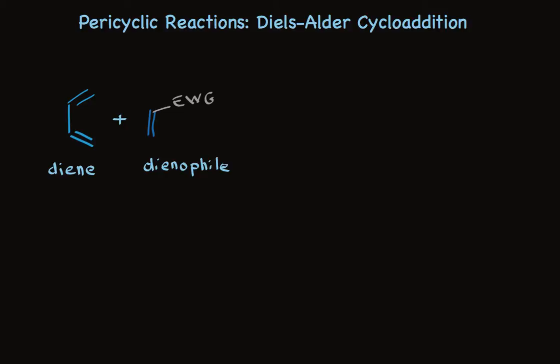This electron-withdrawing group can be one of many things. Here are some examples. Any one of several carbonyl-functional groups. The nitro group is common, and nitrile is well known also.